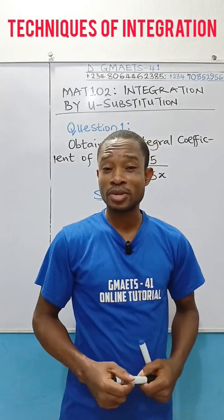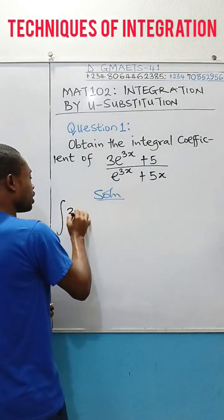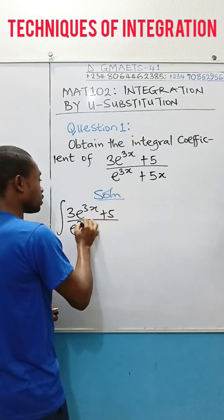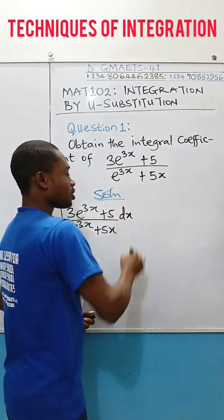So, what are you expected to do? Quickly, let's see what we solve here. This is 3 exponential 3x plus 5 all over exponential 3x plus 5x. You're integrating with respect to x.